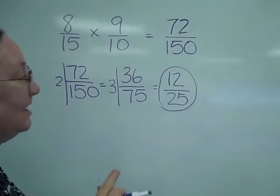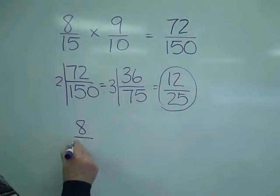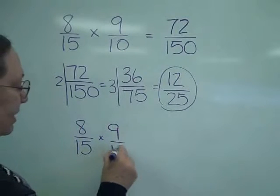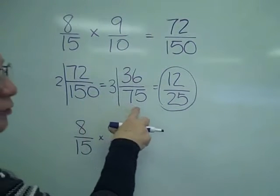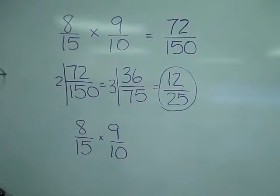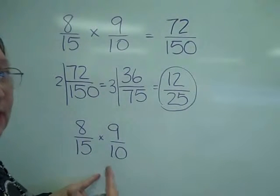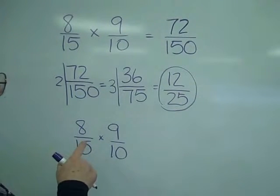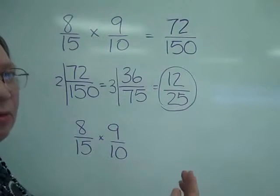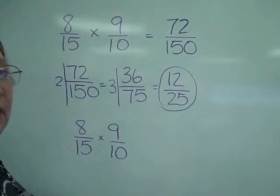There is an easier way to do this. I'm going to go back to the original problem of 8 fifteenths times 9 tenths. Notice that I had a lot of reducing or simplifying that I had to do in two different steps — I want to do it here before I get to the end of the problem. The rule for reducing is that one number has to be in the top, or the numerator, and the other needs to be in the bottom, or the denominator.